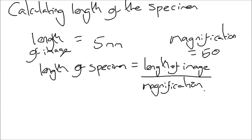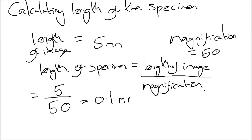We know both values: the length of the image is 5 and the magnification is 50, so it's 5 divided by 50, which gives 0.1 millimetres. Always remember the units — the length of the image is in millimetres, so carry that unit across to your answer. If a different unit is required, such as centimetres, nanometres or micrometres, you'll need to do an additional calculation to convert.